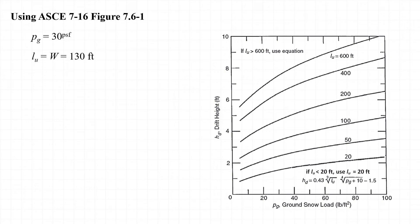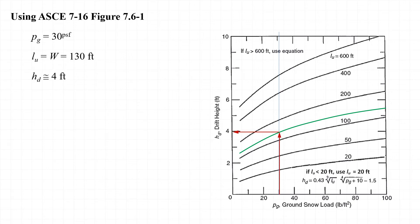The next step is to determine the magnitude of the surcharge and the length over which it acts. To do that we need to determine the drift height H sub D. Using figure 7.6-1 from the 2016 ASCE 7 standard with a ground snow load of 30 psf and L sub U equal to W equal to 130 feet, we strike a line on the chart. Finding the intercept of those lines, the drift height is approximately equal to four feet.